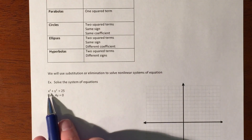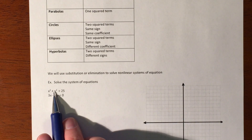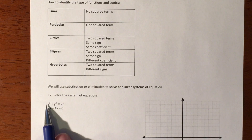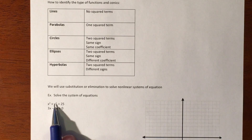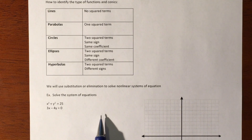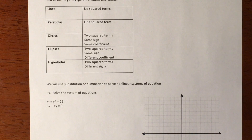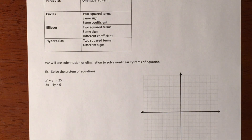A circle is when you have two values that are both squared — x squared and y squared — and the coefficients in the front match perfectly with a plus sign. If it's an ellipse you have two squared terms with a plus sign, but the coefficients don't match, which is where one direction ends up wider than the other. A hyperbola is when you have a minus sign between them. That's kind of where we're going with these nonlinear systems.